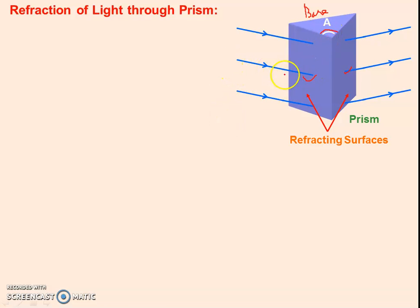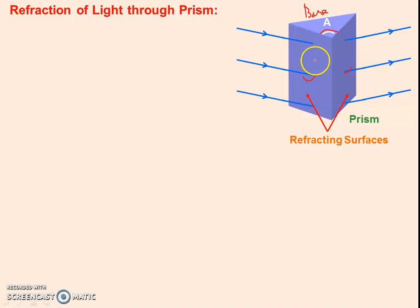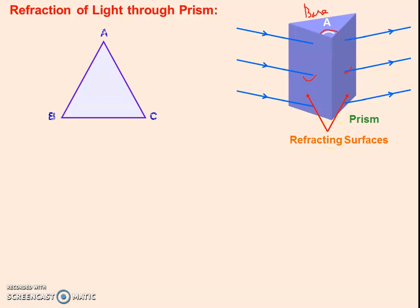Now, rays are incident at one refracting surface, and after double refraction from the first surface and the second surface, the ray emerges out from the second one. This is the structure of a Prism.